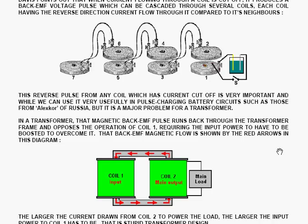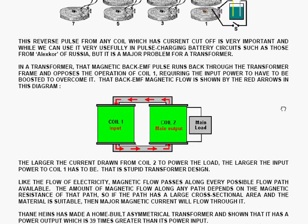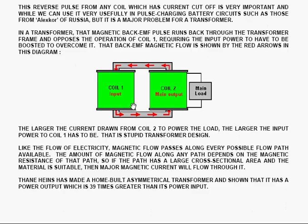The reverse pulse from any coil when it's cut off is very important. And while we can use it very usefully in pulse charging battery circuits, such as those from Alex Gore of Russia, it's a major problem for a transformer. In a transformer, that magnetic back EMF pulse runs back through the transformer frame and opposes the operation of coil one, requiring the input power to have to be boosted to overcome it. Now that is a stupid transformer design.